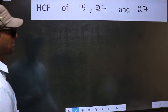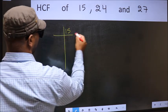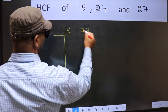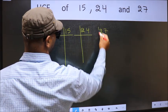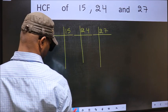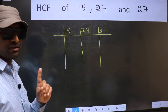What I mean is 15, 24, 27. This is your step 1.